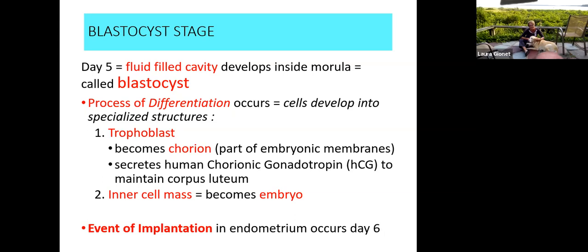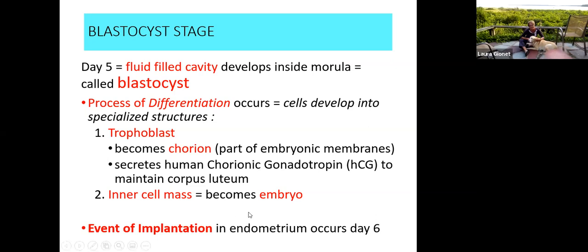The chorion is the fetal side of the placenta. It burrows into the endometrium and ultimately starts releasing human chorionic gonadotropin. The other group of cells becomes the inner cell mass, which ultimately becomes the embryo. So from that ball of cells you get a fluid-filled cavity; the cells at the implanting end become the trophoblastic cells and ultimately the chorion, and the remainder becomes the embryo. Once it embeds into the endometrium, that event is called implantation, occurring about day six to eight.